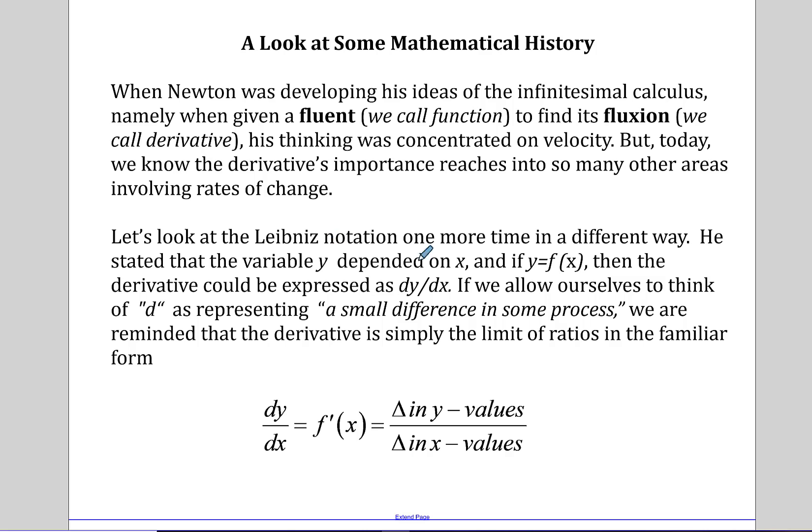When you look at the Leibniz notation one more time, we're going to think of it in a different way. He stated that the variable y depended on x, and if you had a function y equals f of x, then the derivative could be expressed as dy/dx. If we allow ourselves to think of the d part as representing a very small difference in some process, then that helps remind us that the derivative is simply the limit of the ratios in a really familiar form. So when we think about dy/dx, it's the change in y values divided by the change in the x values, and that's what produces that instantaneous rate of change over a very small unit.